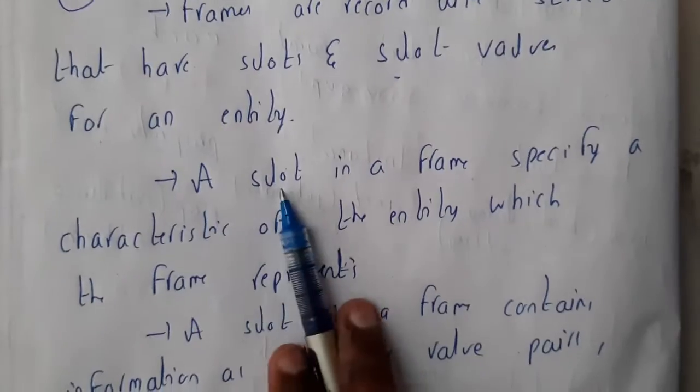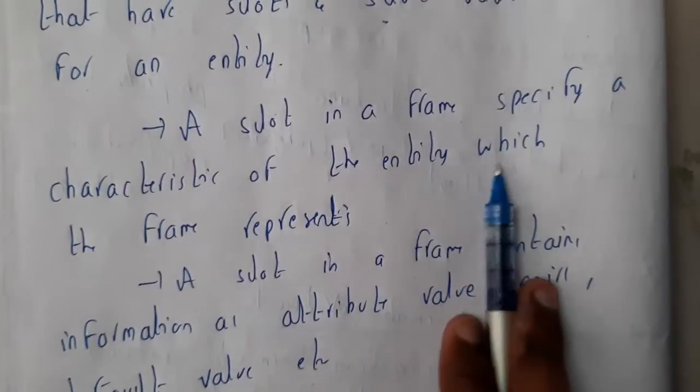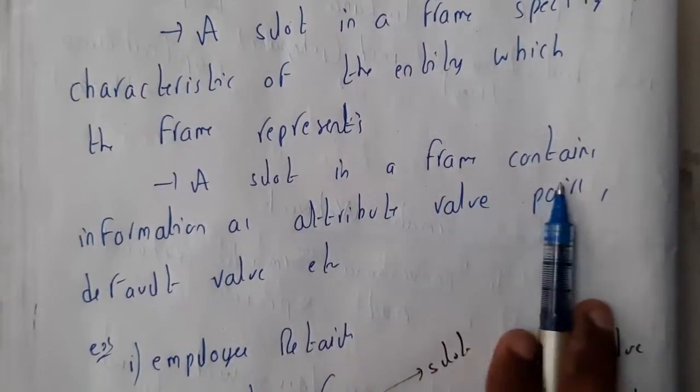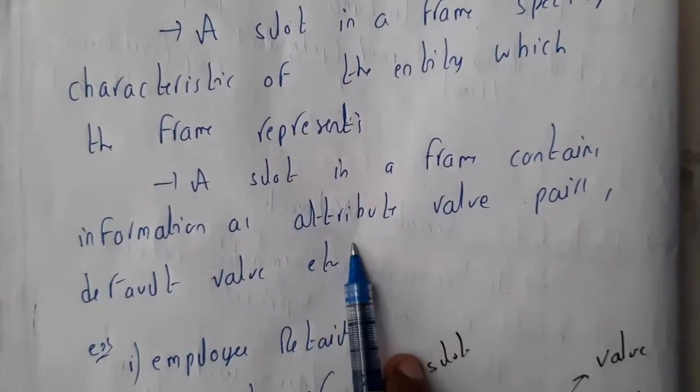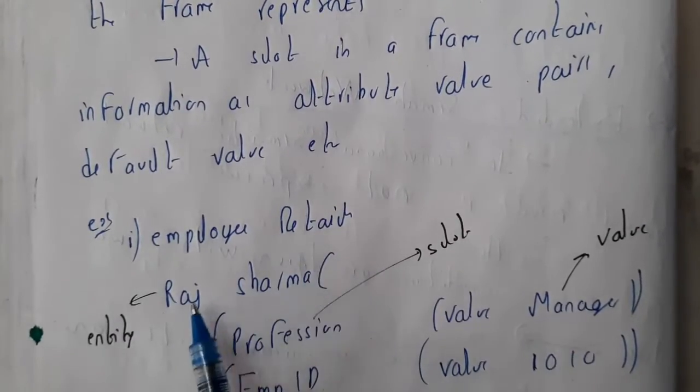A slot in a frame specifies a characteristic of entities which the frame represents. A slot in a frame contains information as attribute-value pairs, default values. So employee details: the name is Raj Sharma.